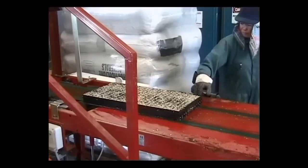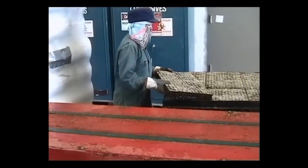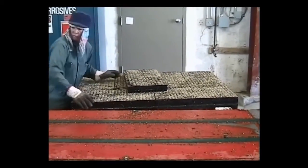The tray then passes out of the seed line to the vermiculite dispenser and the water tunnel before being stacked onto a pallet ready to go into the germination room.